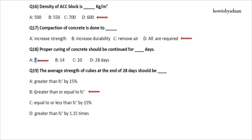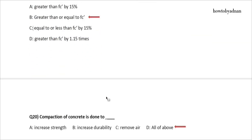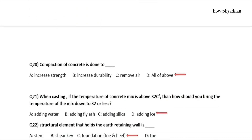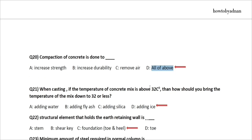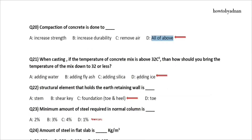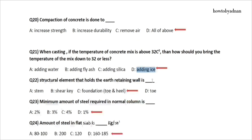Question 19: The average strength of cubes at the end of 28 days should be? The answer is option B: Greater than or equal to Fc. Question 20: Compaction of concrete is done to? The answer is option D: All of the above. Question 21: When casting, if the temperature of concrete mix is above 32°C, then how should you bring the temperature of the mix down to 32°C or less? The answer is option D: Adding ice.